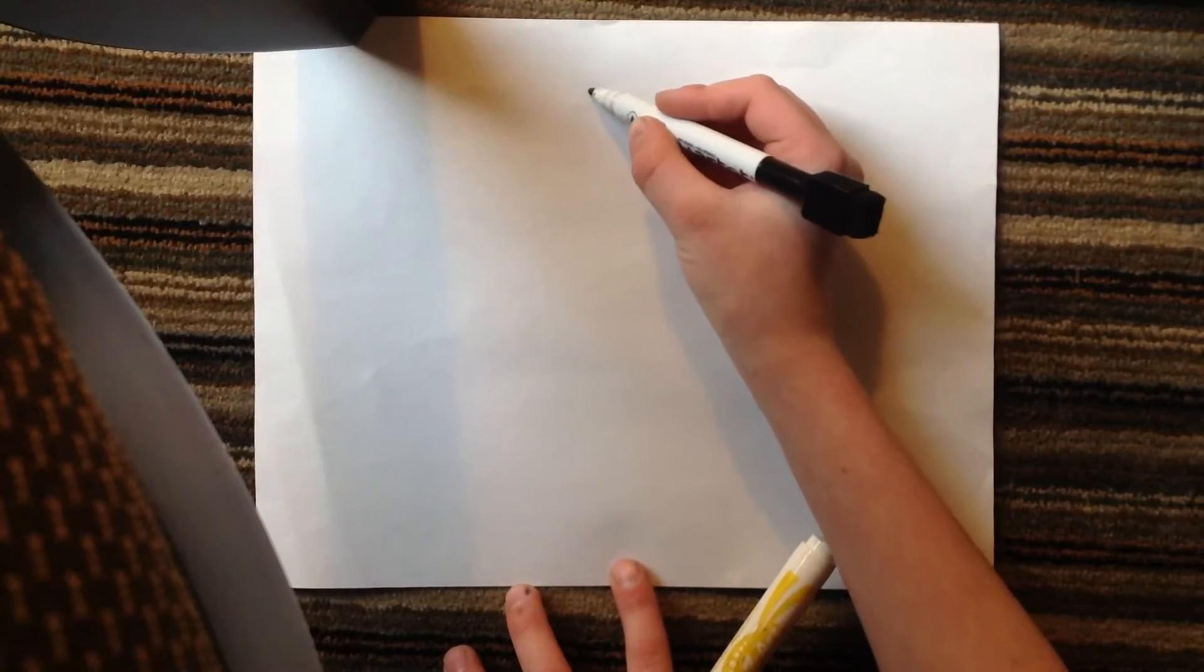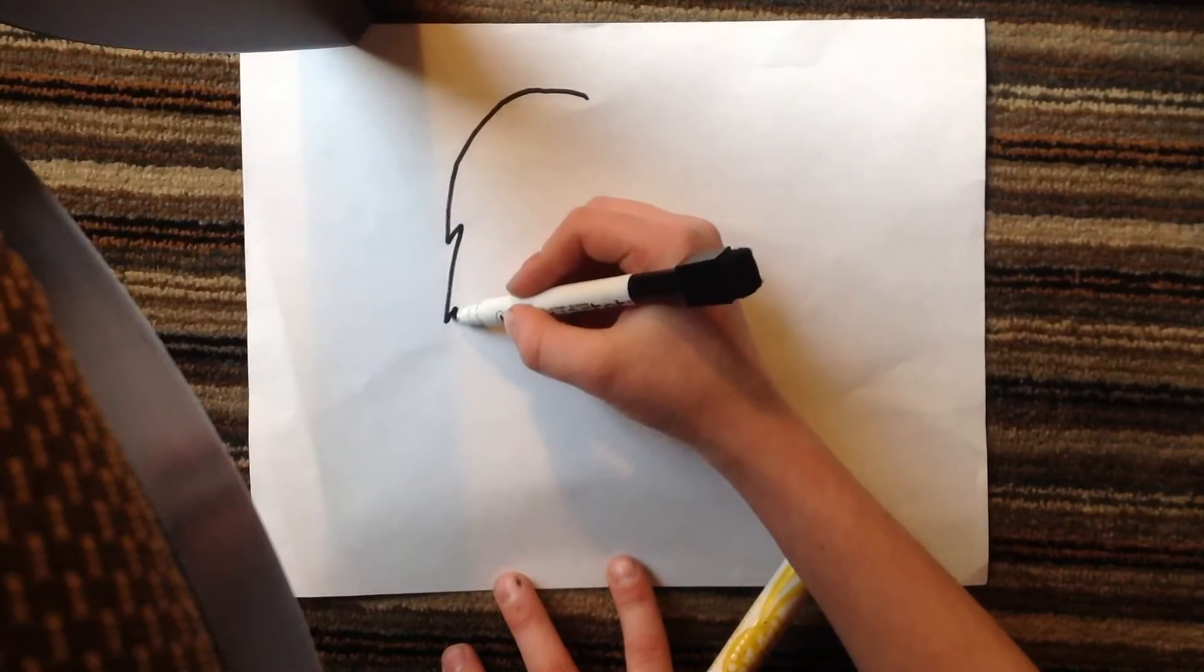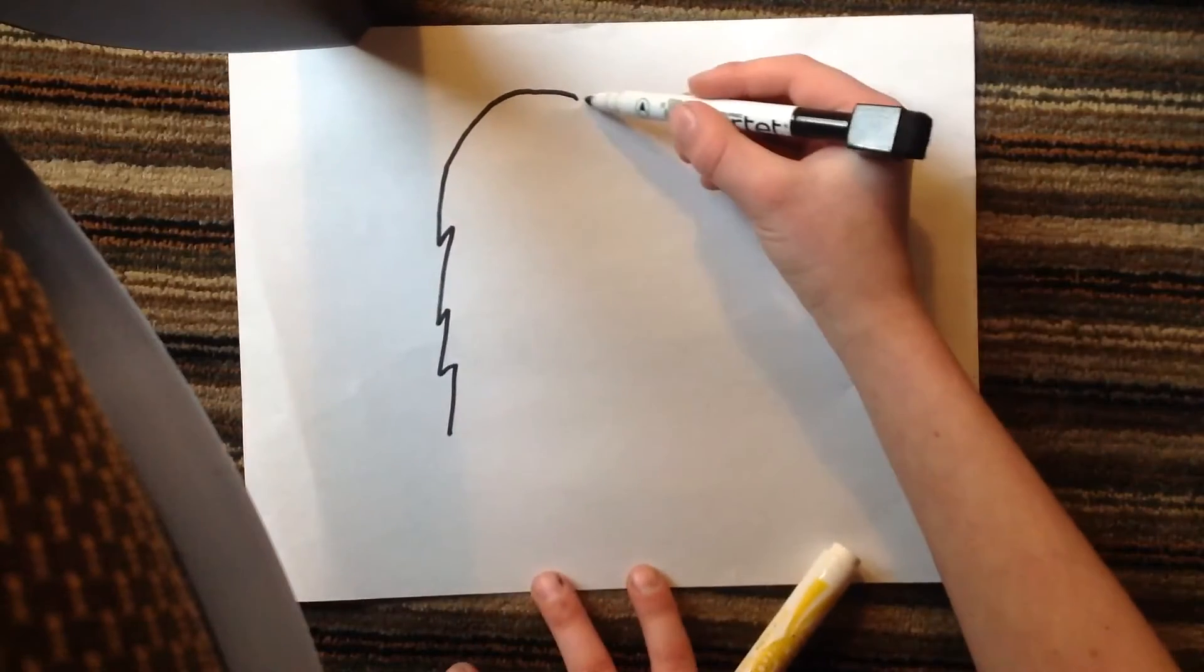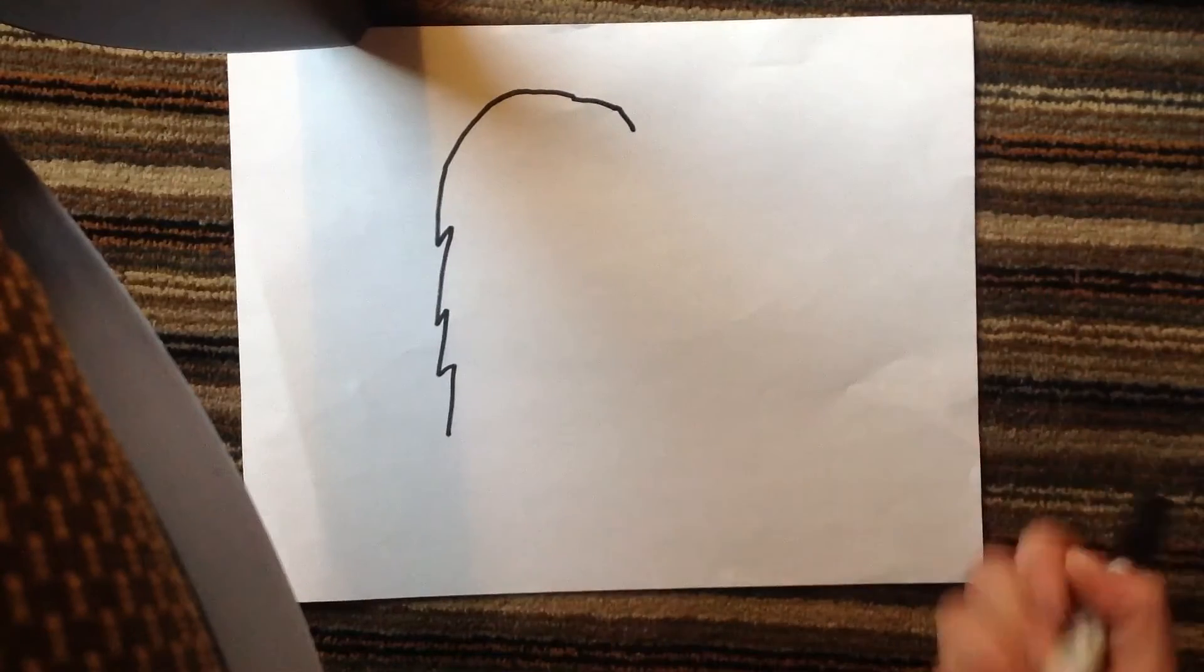What you do first is you do a little curve down here and then do kind of like lightning strut, like three or four of them. And then leave it like that and make a little slit.